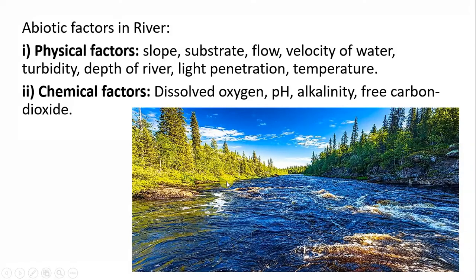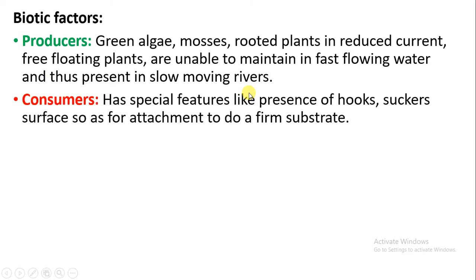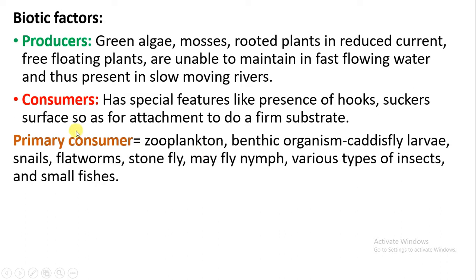Now looking at the biotic factors in the river — the producers include green algae and mosses. In places where the river current is reduced, rooted plants are also present, along with free-floating plants in areas of low current. Consumers in the river have special structures like hooks and suckers to attach to substrates in the fast-flowing water current.